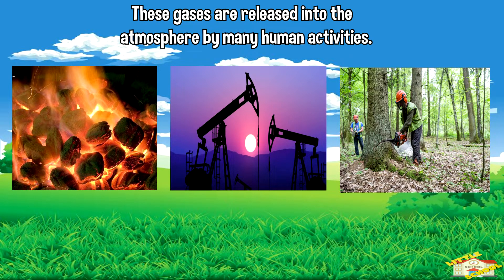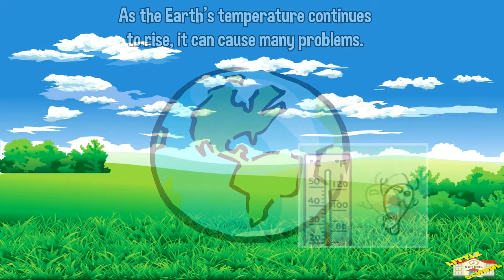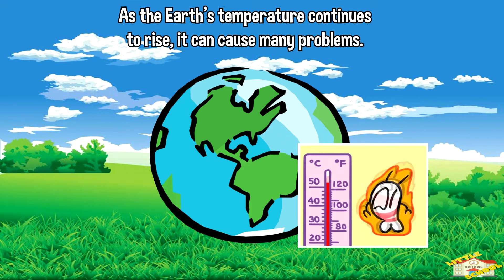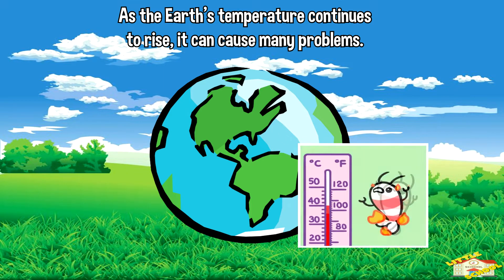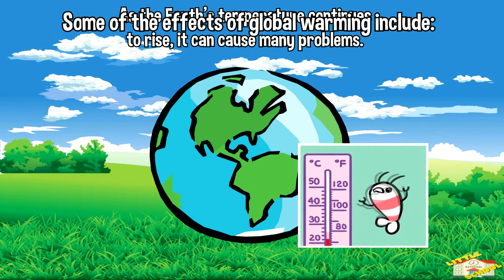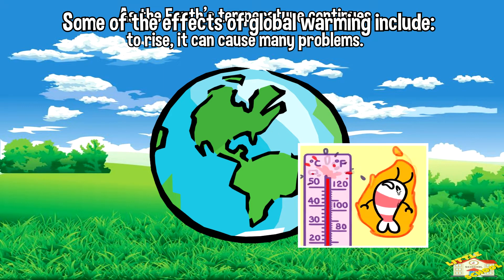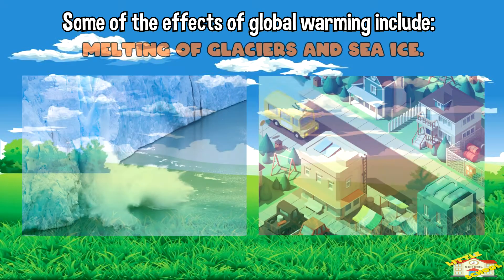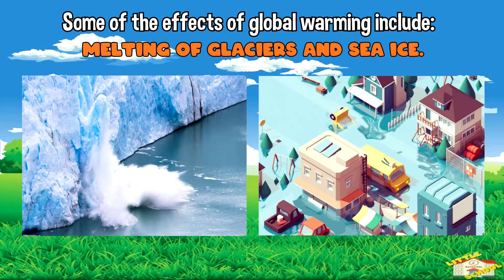These gases are released into the atmosphere by many human activities, including burning fossil fuels like coal, oil, and gas, and cutting down forests. As the earth's temperature continues to rise, it can cause many problems for people, animals, and the environment.